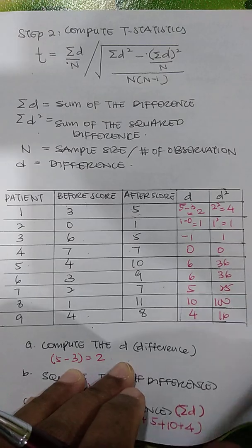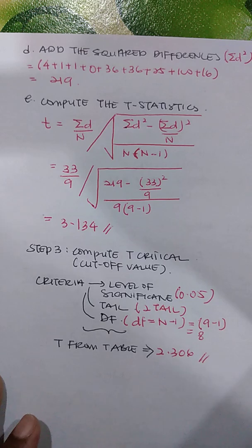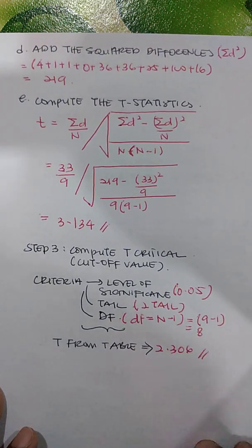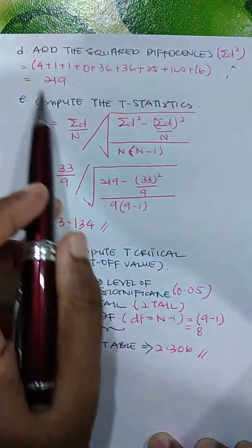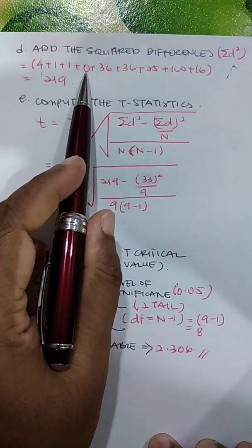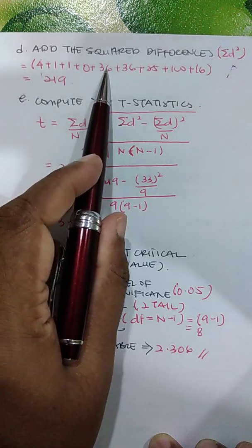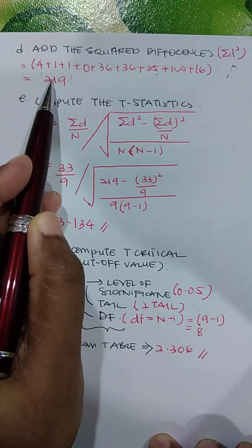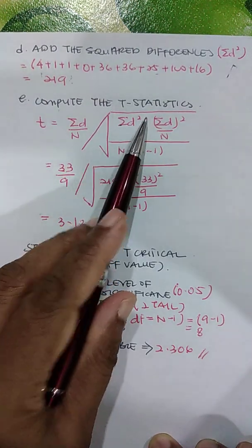Next, we add the squared differences: 4 plus 1 plus 1 plus 0 plus 36 plus 36 plus 25 plus 100 plus 16, which gives a sum of D² equal to 219. Based on that information, we can compute the T statistic.